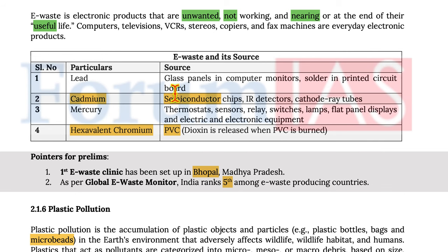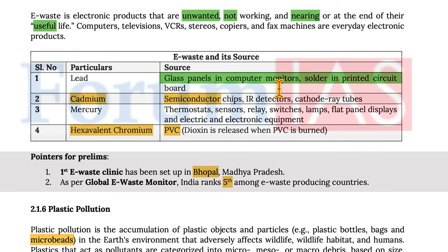In e-waste, lead is sourced from glass panels used in computer monitors and solder in printed circuit boards. Cadmium is found in semiconductor chips, infrared detectors, and cathode ray tubes.